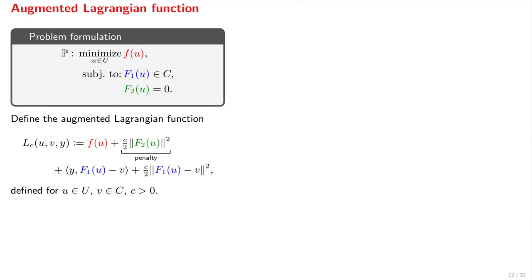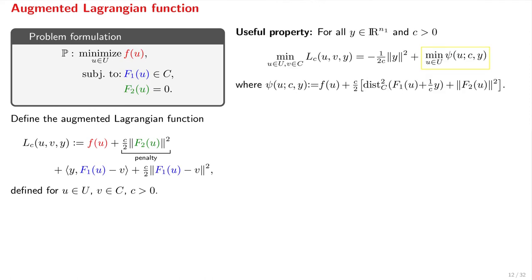Let us now focus on problems that involve constraints of the F1 and F2 type. Firstly, we define this augmented Lagrangian function LC of u, v, and y, which involves a simple quadratic penalty term for F2, and is defined for all u in U and for all v in set C. A useful property is that the problem of minimizing the augmented Lagrangian function with respect to u and v can be reduced to the problem of minimizing a function psi with respect to u. The good news is that this function psi is continuously differentiable with respect to u and has a Lipschitz gradient,